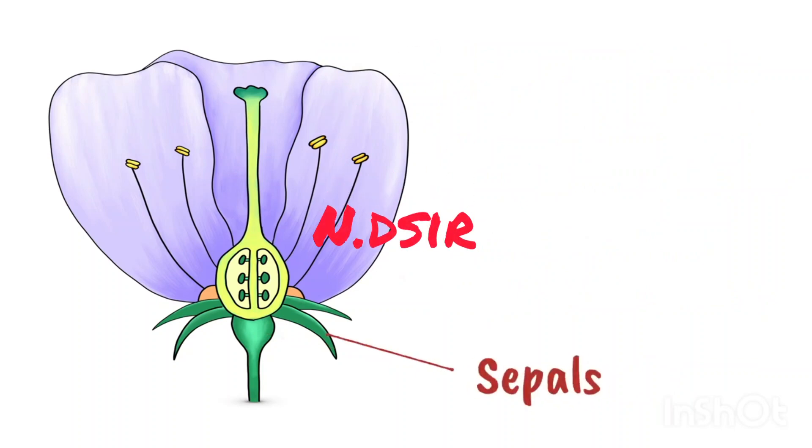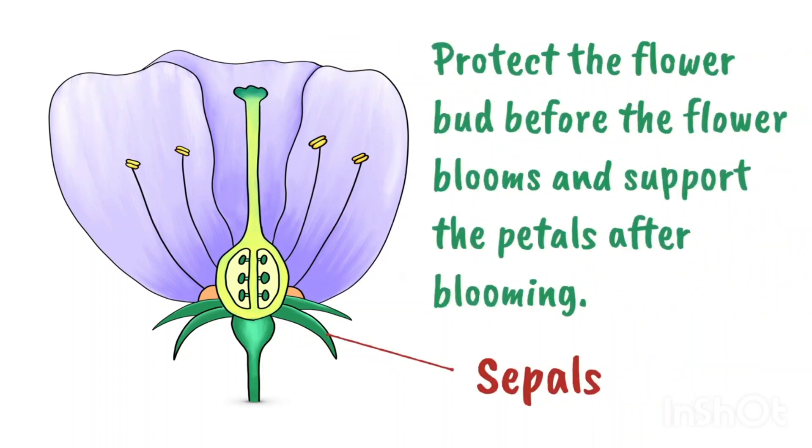Lastly, the sepals. These are there to protect the flower bud before the flower blooms.